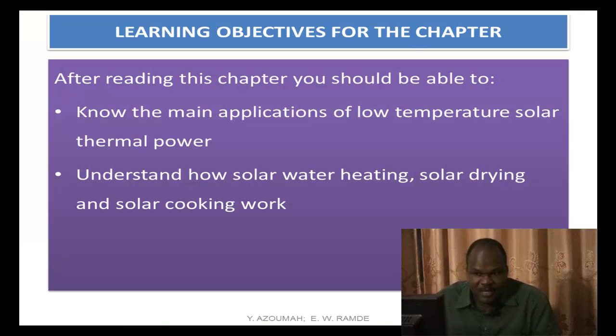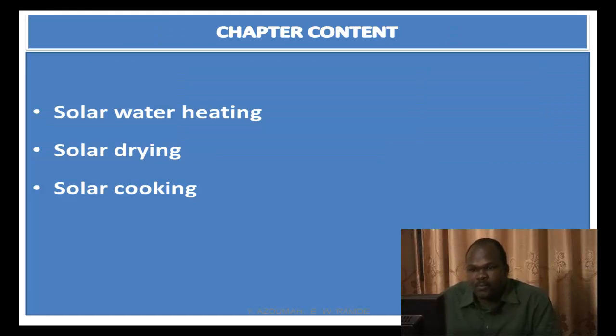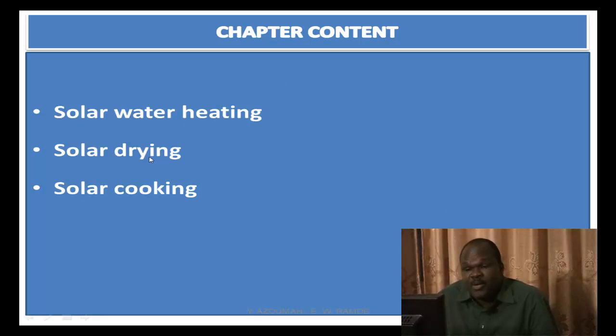Solar cooling could be part, but we devoted a full chapter for solar cooling. So the learning objectives for this chapter are: number one, to know the main applications of low-temperature solar thermal power; and number two, to understand how solar water heating, solar drying, and solar cooking work. The chapter content is: first point, solar water heating; second point, solar drying; and the third point, solar cooking.